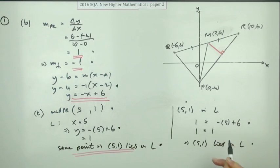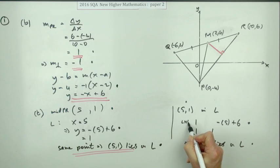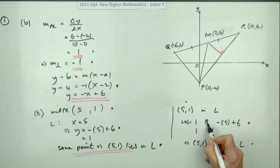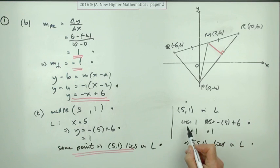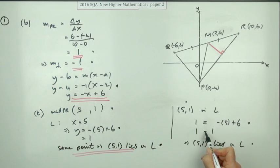Now the other two marks are sort of split up here. One is for putting five into the equation of the line, and the second mark is for communicating the result that you've got the same answer. Now you might have done that instead by putting them both in, in other words trying the point five one in the line L to see if it fits.